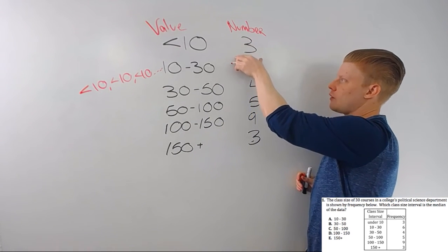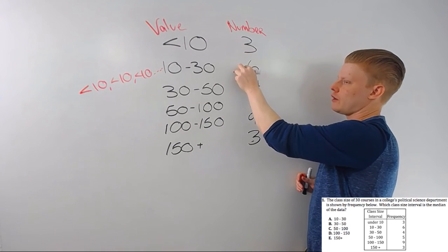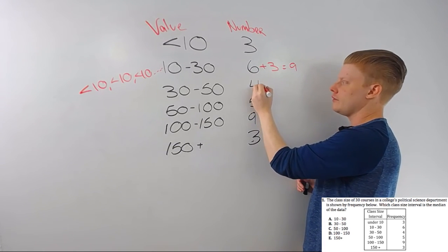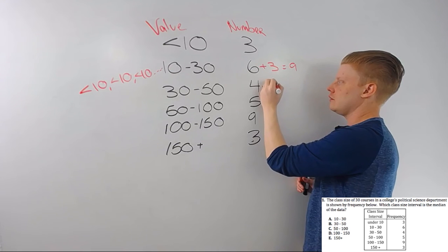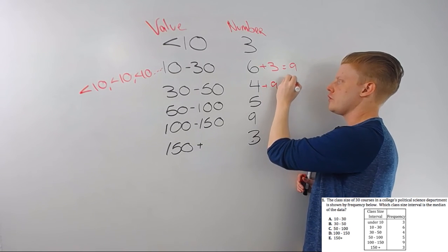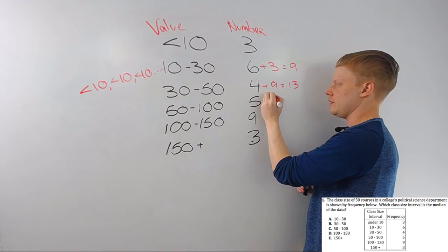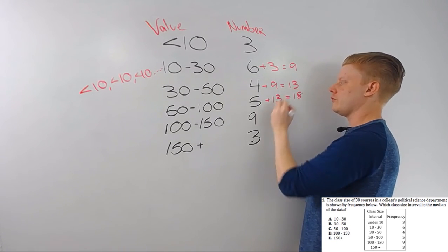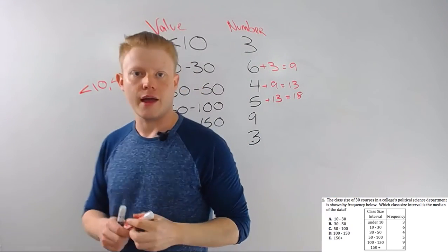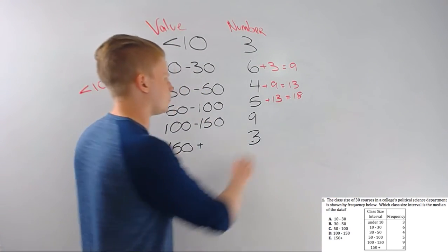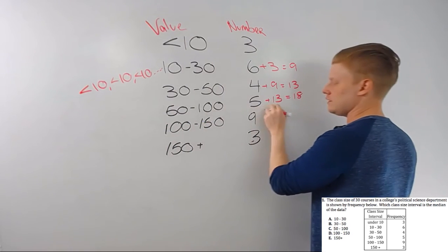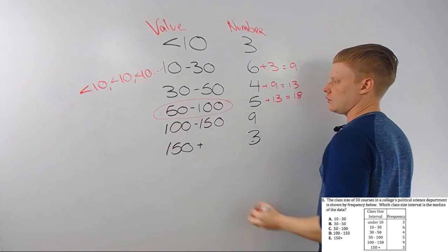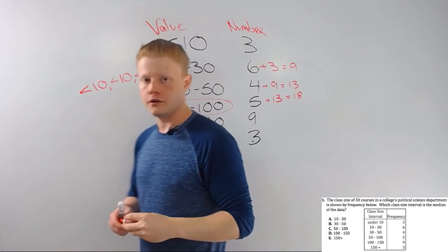Well, these are my first three values, and this is my fourth through ninth value. This is my 10th through 13th value, and then this is my 14th through 18th value. And you'll see the 15th and 16th, they're sitting right in the middle here, and that means it's 50 to 100.